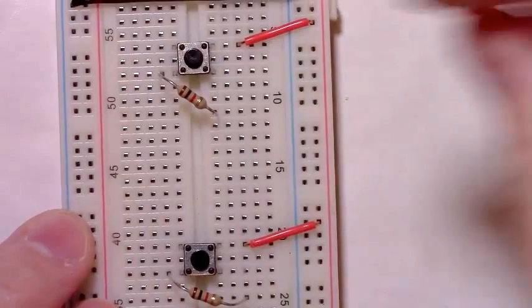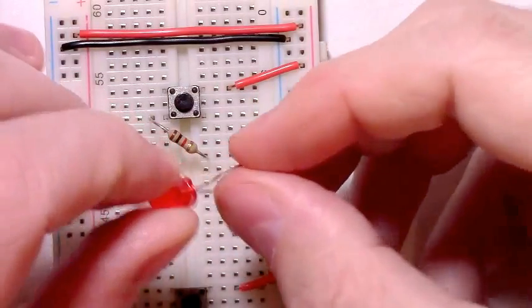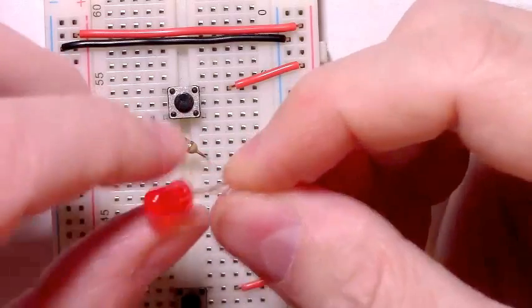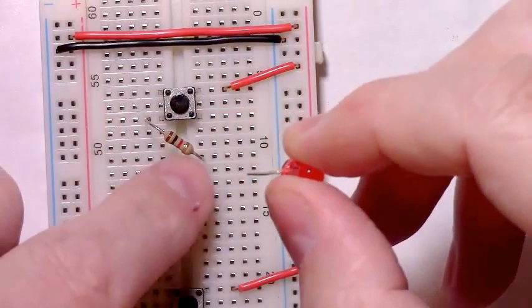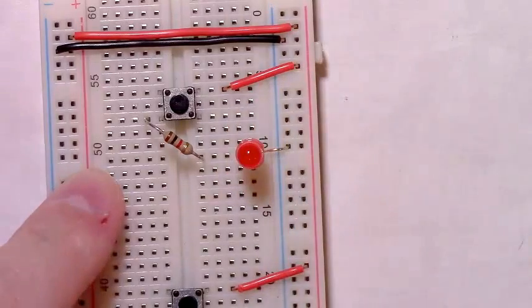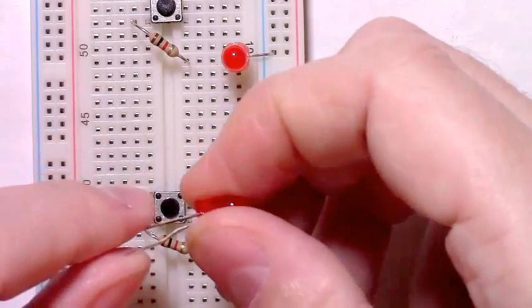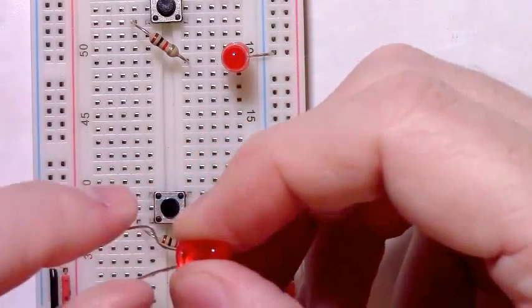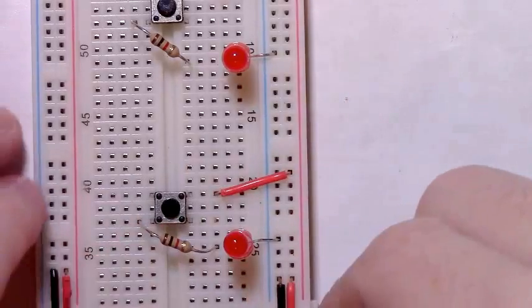Then we can add in our two indicator LEDs, paying attention to the orientation. The cathode side or the flat side goes toward the ground rail, the anode toward the 1K resistor. Repeat the same procedure for the bottom, cathode side to the ground rail, anode side to the 1K resistor.